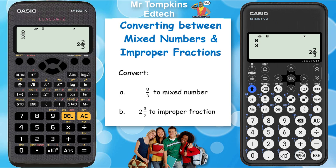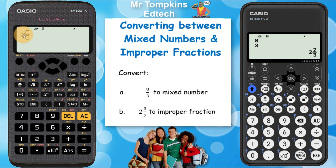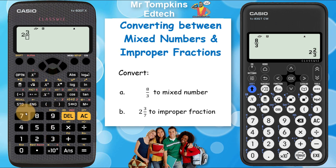Back to the old Casio and I now want to convert a mixed number — 2 and 3 sevenths — into an improper fraction. To type that in I'm going to press the 2 button and then the shift key and then the fraction button. You'll see above the fraction key you've got the layout for a mixed number — the 2 becomes the main number and then I've got two boxes for the rest of the fraction. I'm going to type the 3 in the top box, press the down arrow, and press 7 in the bottom box. Pressing equals, you can see this calculator immediately converts that into an improper fraction and I get 17 over 7.